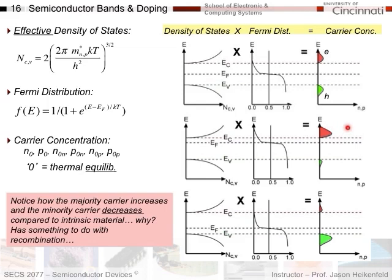An important note: just because the Fermi level sits between the conduction and valence bands does not mean electrons exist there — that region is the band gap, and there are no carriers between the bands. The 50% probability is just a mathematical probability, not a physical presence. Also notice that when we doped N-type, the hole concentration decreased. This is because the many additional electrons in the conduction band can recombine with holes in the valence band, wiping them out and reducing the hole concentration.